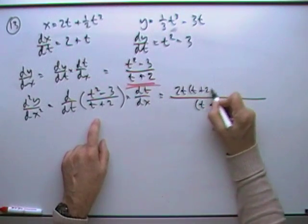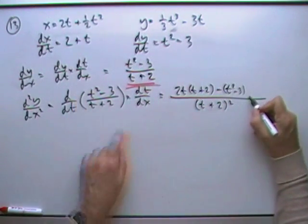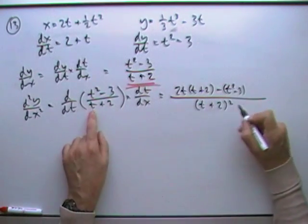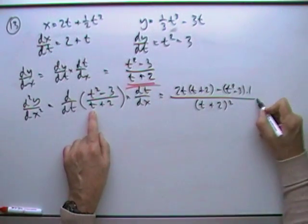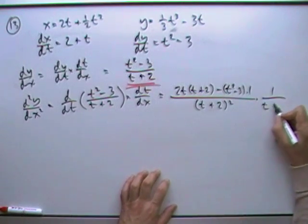Minus, leave the top alone, t squared minus 3, differentiate the bottom, the original one, that's just times 1, times dt by dx, which of course is 1 over t plus 2.